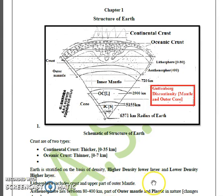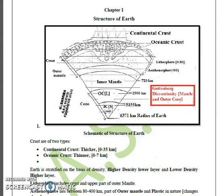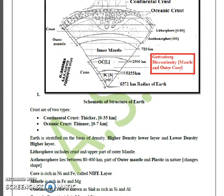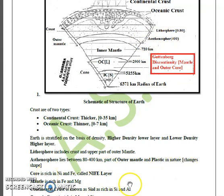The crust beneath the ocean is referred to as oceanic crust and is thinner; the crust beneath the continent is called continental crust and is thicker. The lithosphere is the crust plus the uppermost part of the outer mantle. The asthenosphere lies from 80 to 400 km, is part of the outer mantle below the lithosphere, and is weak, so plastic in nature.